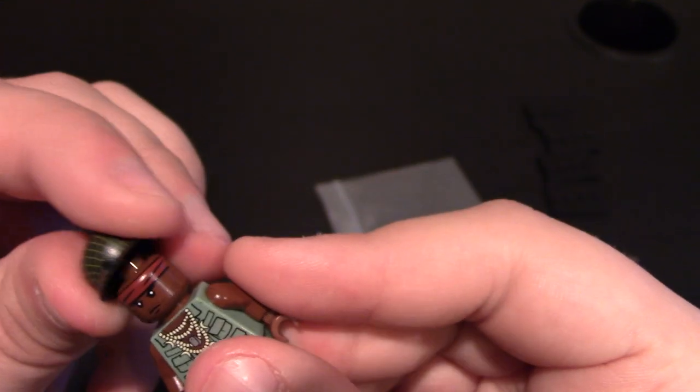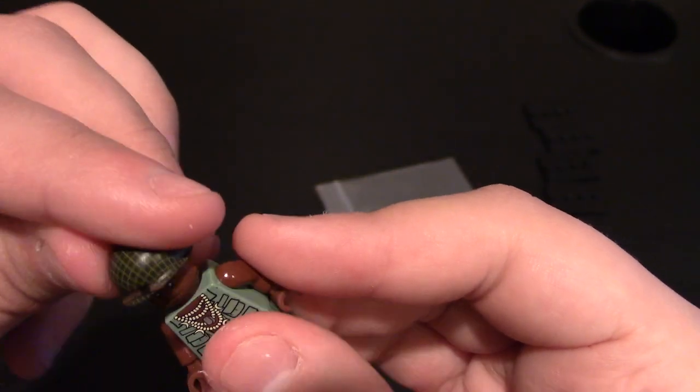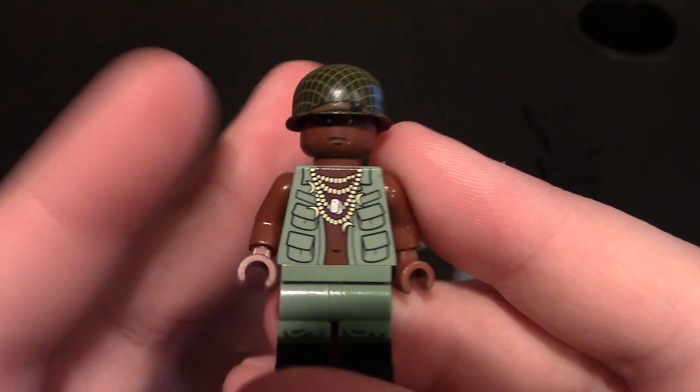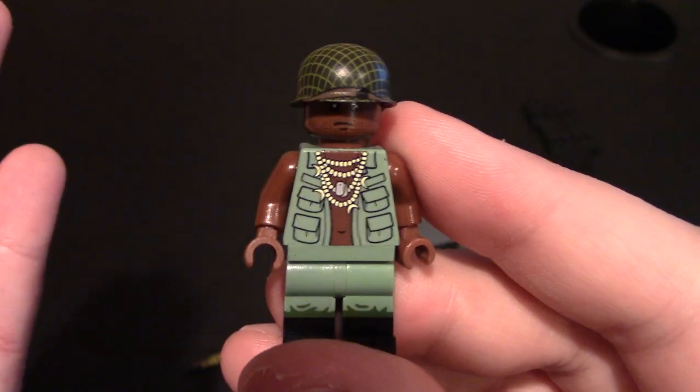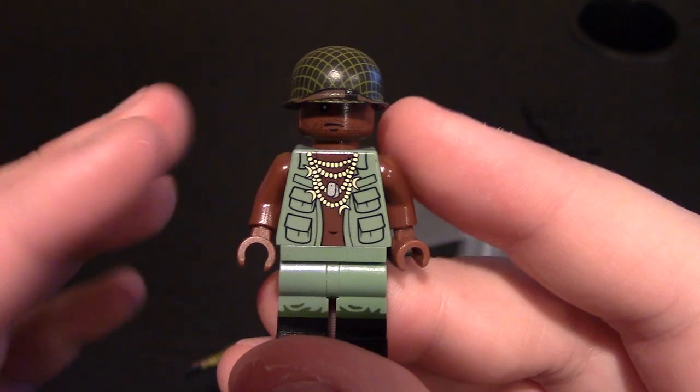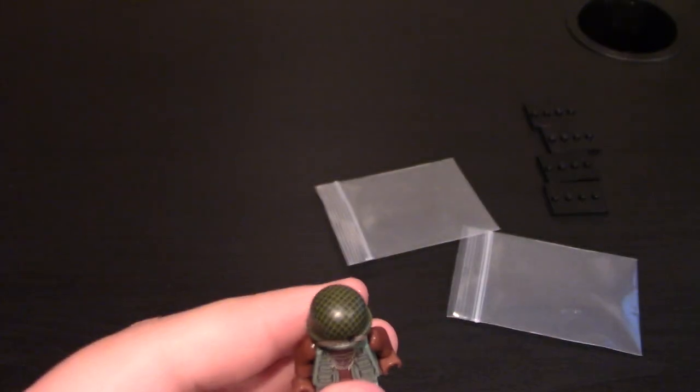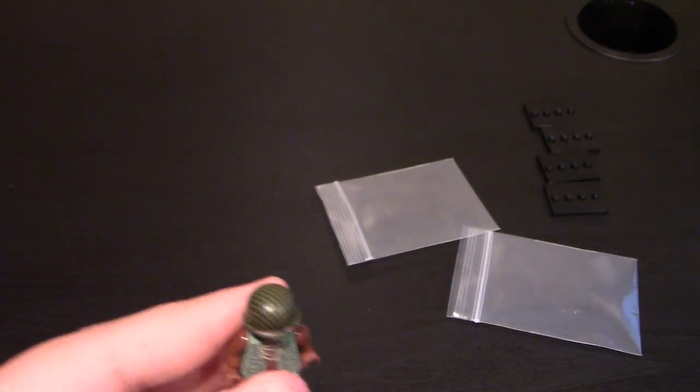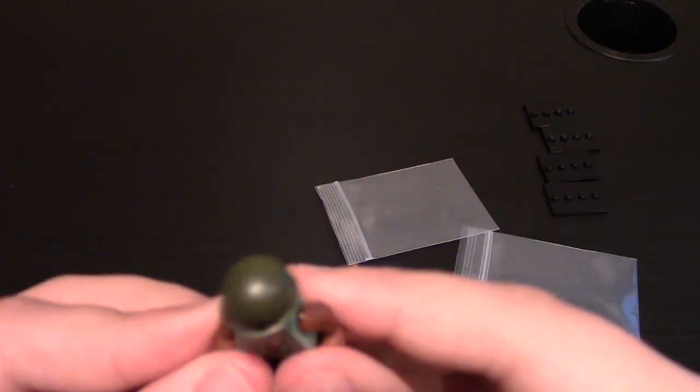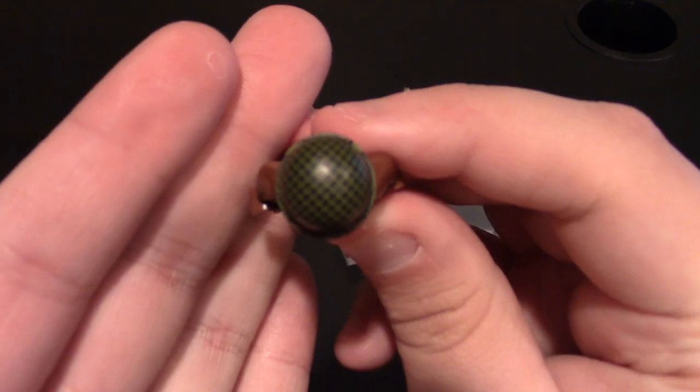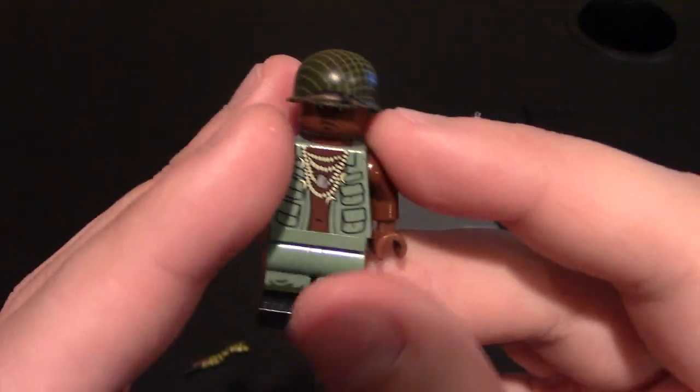Here is his helmet, this is a Brick Arms M1 pot helmet. You can see the bandana is kind of covered but that's okay. It is printed with the mesh. This one's exact name is the M1 web helmet version 2. I've showed these before in my previous Vietnam soldiers.